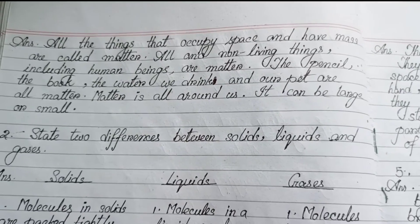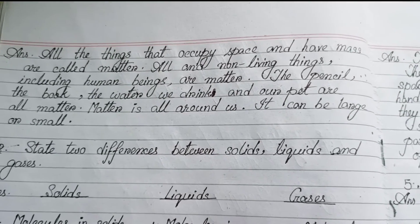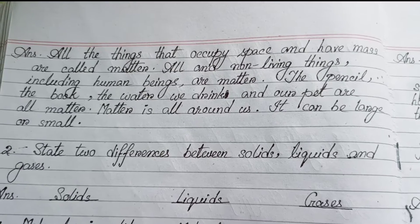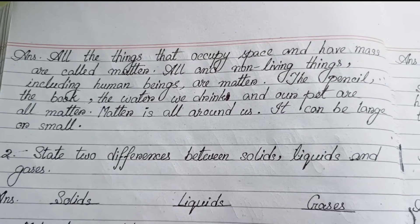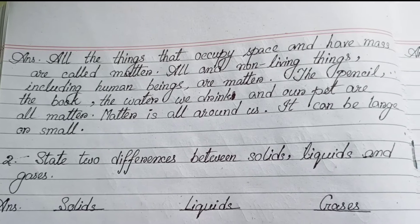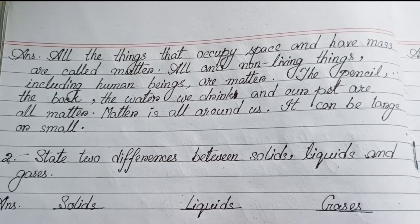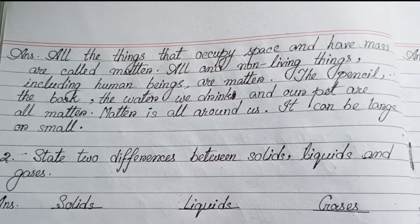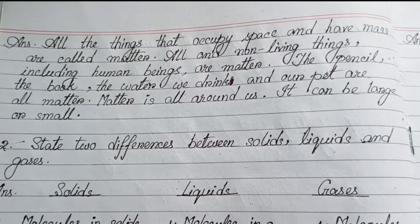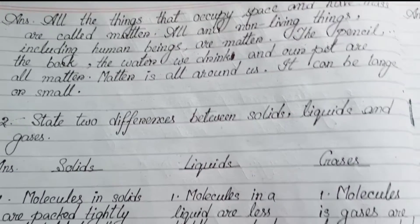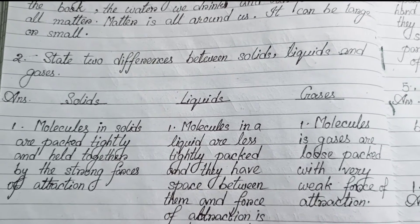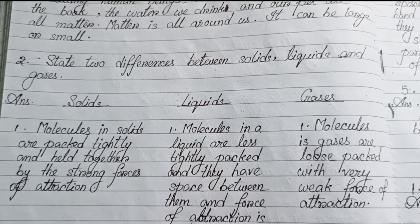All things that occupy space and have mass are called matter. All living and non-living things, including human beings, are matter. The pencil, the book, the water we drink, and our pets are all matter. Matter is all around us — it can be large or small.